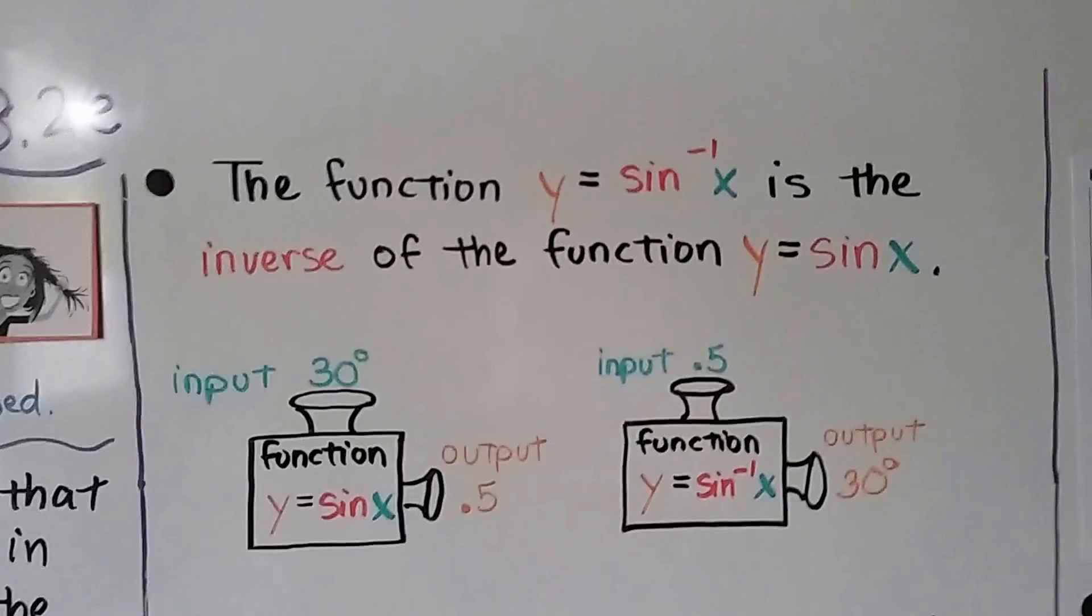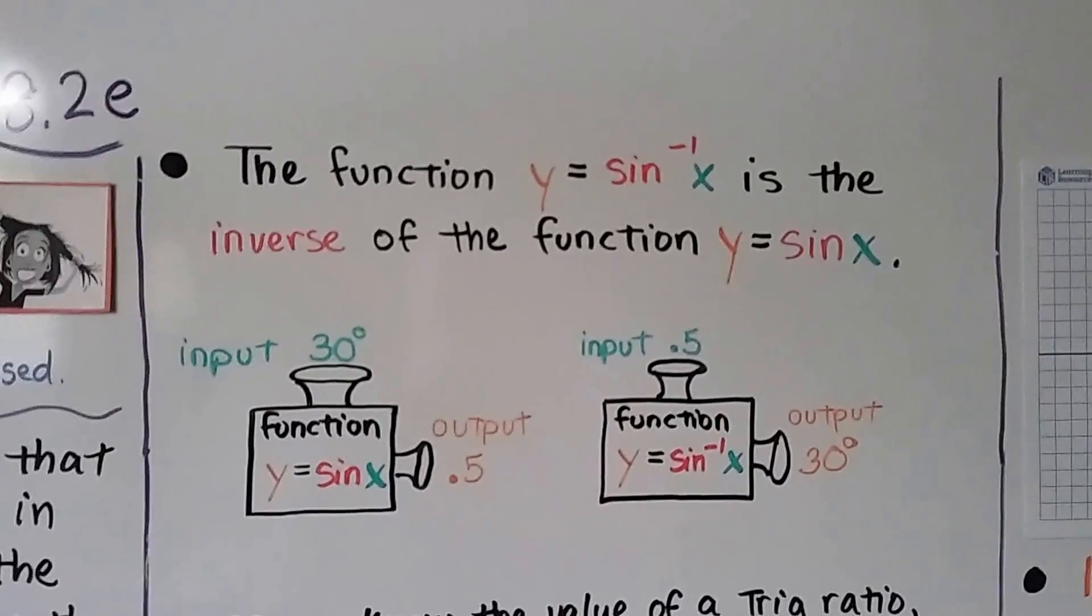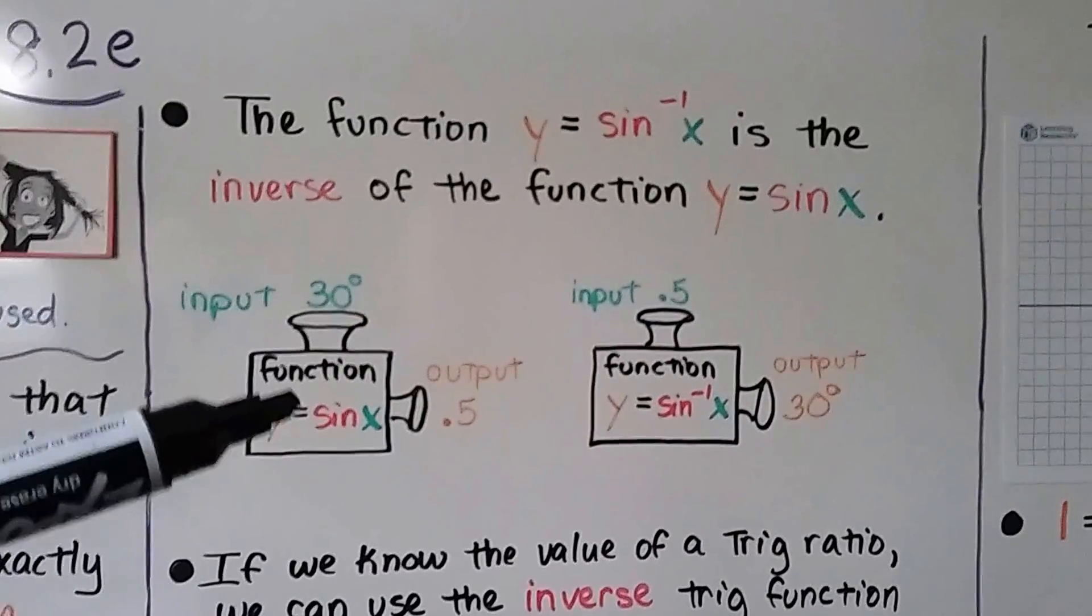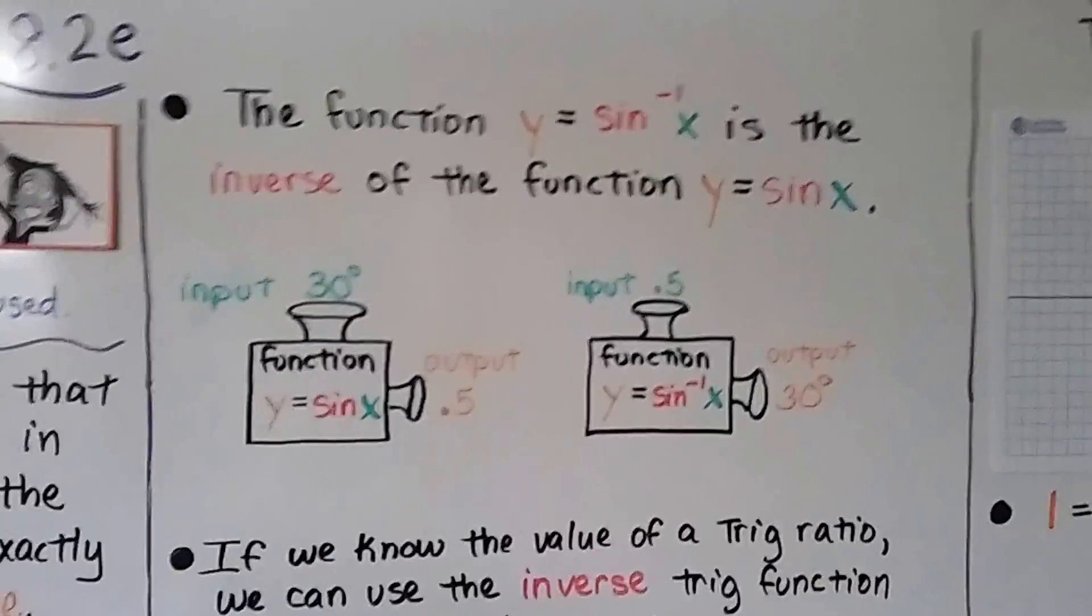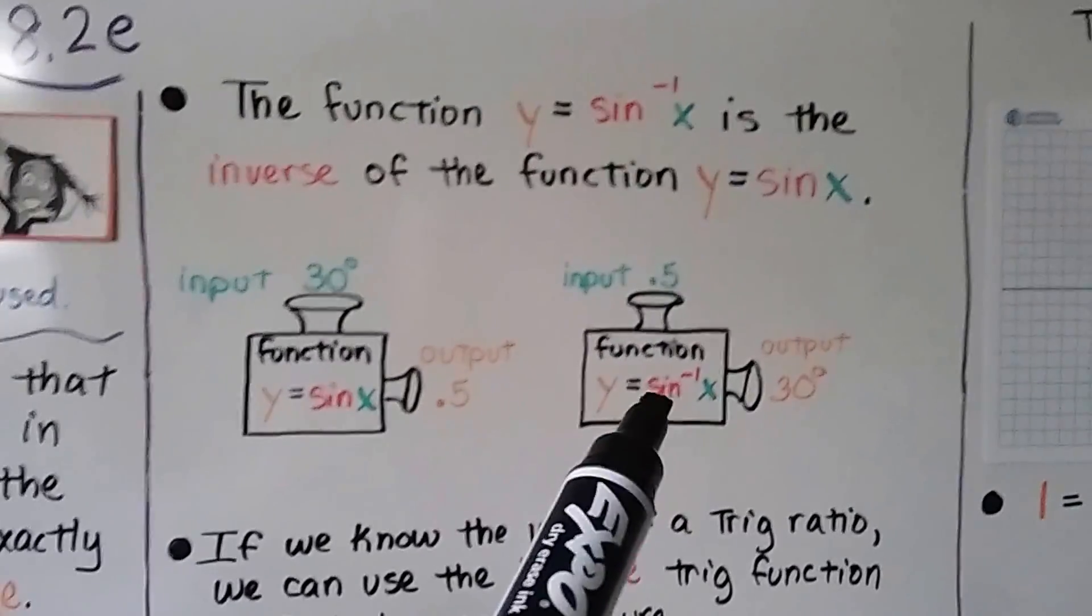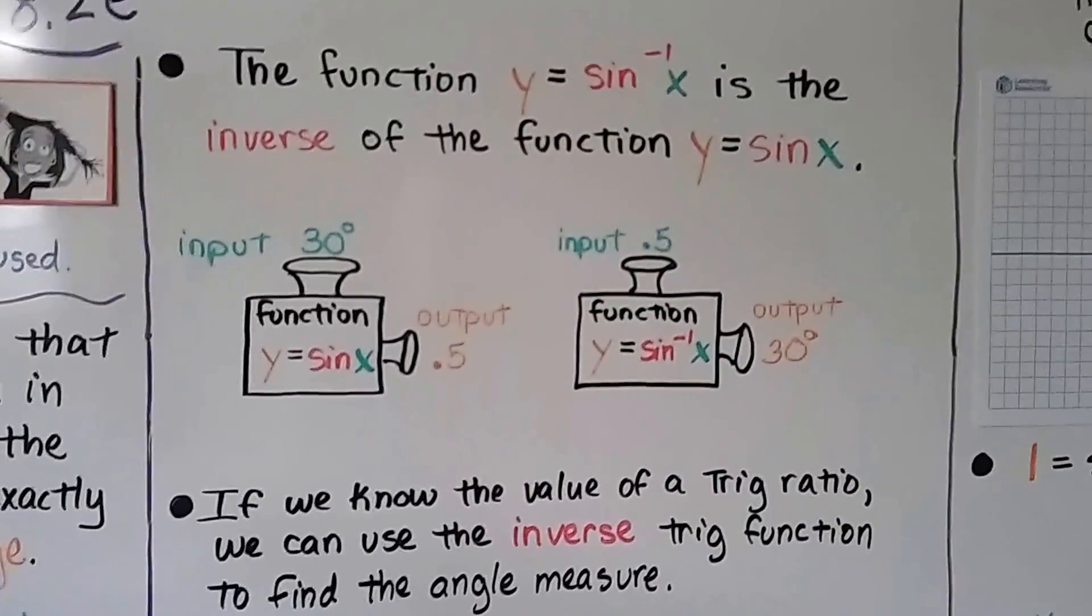And the function y equals the inverse sine of x is the inverse of the function y equals sine of x. We've got our little function machines. This one is y equals the sine of x. If we put in 30 degrees, our output will be 0.5. This is the inverse, y equals the inverse sine of x. If we put in the 0.5, our output will be 30 degrees.